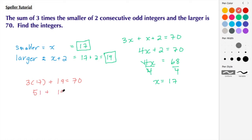Adding 19 gives us 51 + 19 = 70, which checks out. This proves that 17 and 19 are the